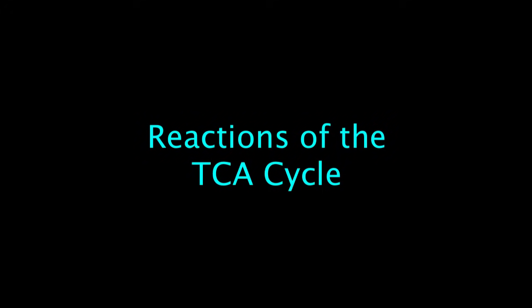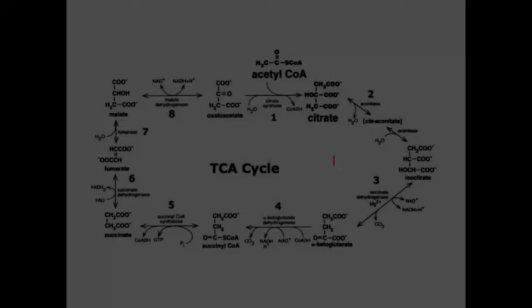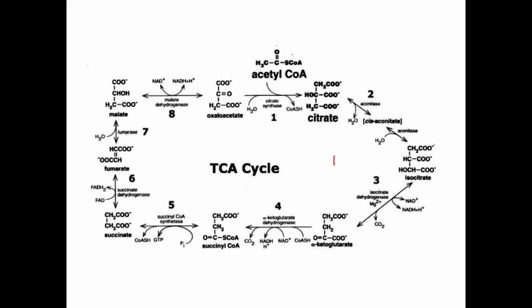Now the product, acetyl-CoA, can be completely metabolized to carbon dioxide through the reactions of the tricarboxylic acid, or TCA cycle — also known as the citric acid cycle or Krebs cycle. This pathway performs other functions in the cell in addition to oxidation of fuel molecules. The intermediates in the TCA cycle are all important building blocks for other molecules. It's not necessary to memorize all the enzymes and intermediates in this pathway, but we do need to look at the process and point out a few important features.